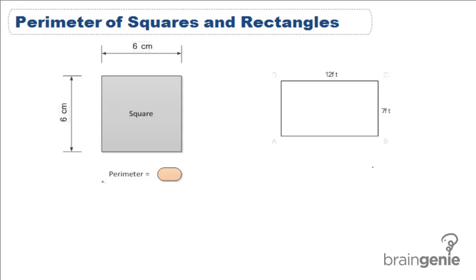Squares and rectangles have equations to find the perimeter that are much easier than adding up all of the sides.